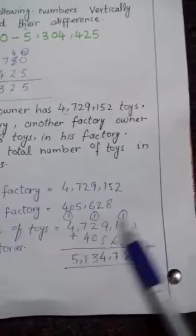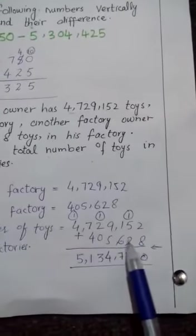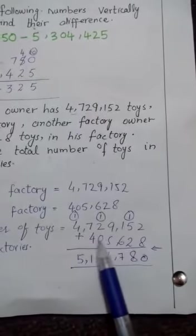4. Now, 8 plus 2 is 10. 0 is here and 1 is carried to the next value.